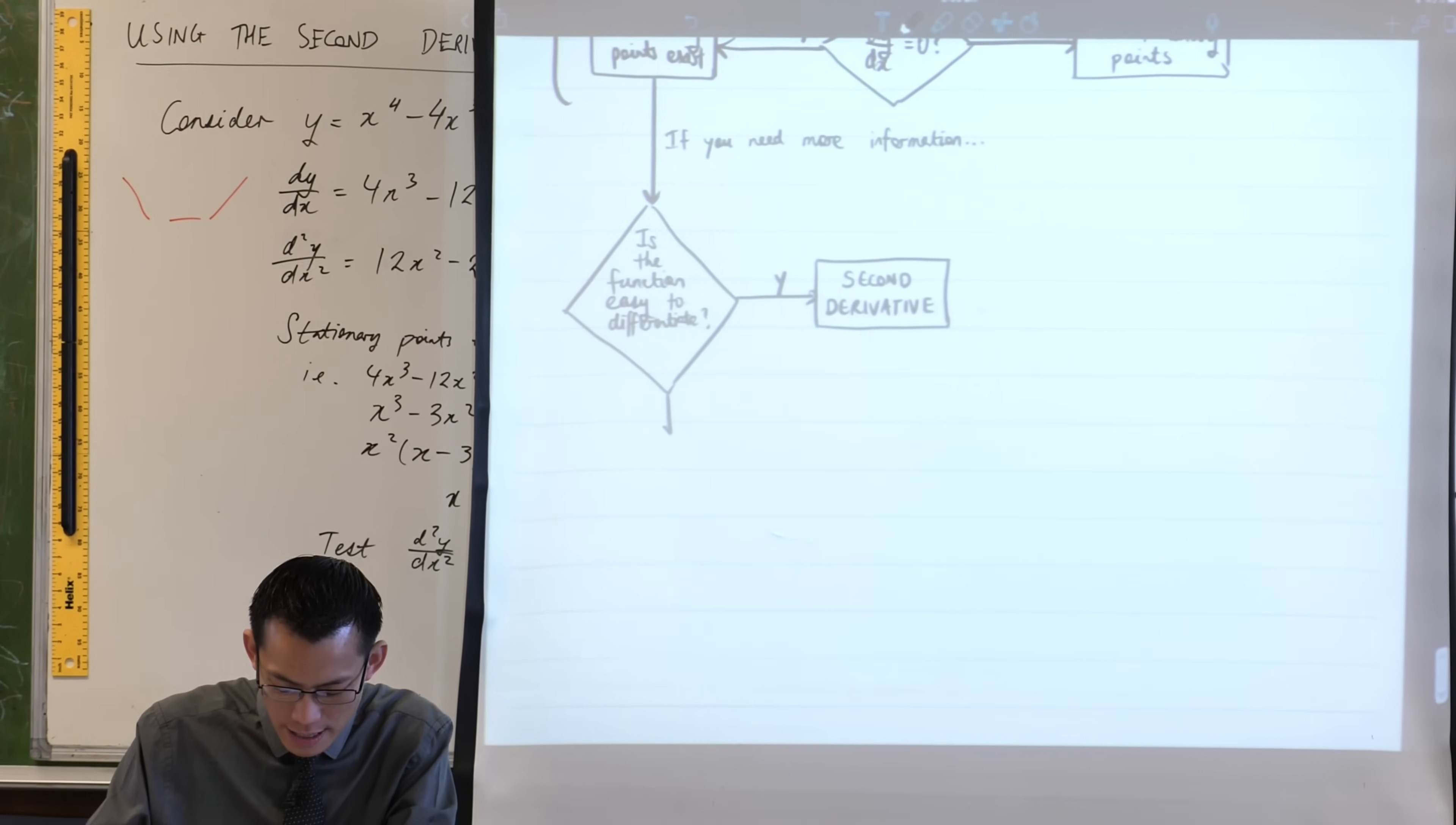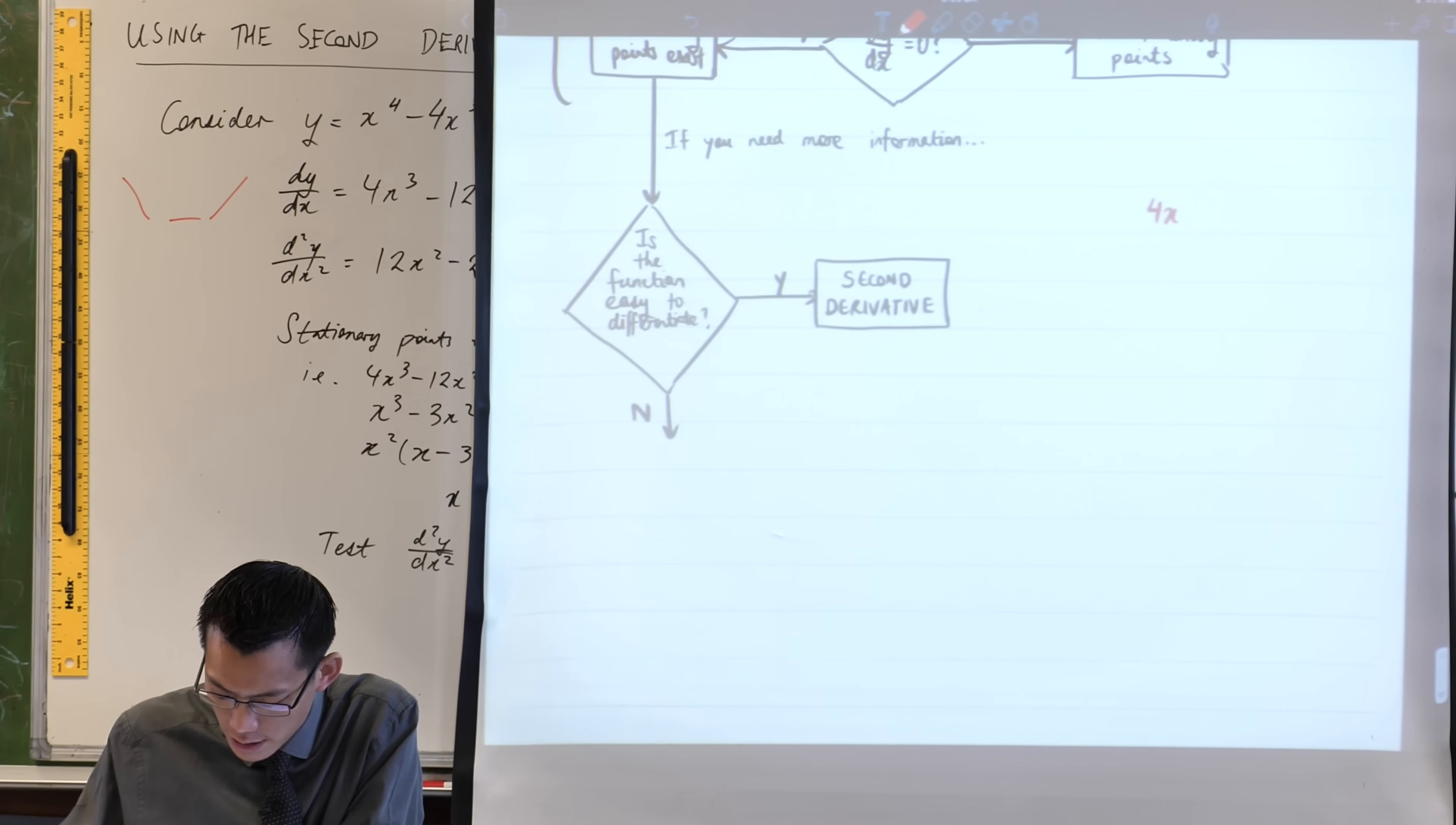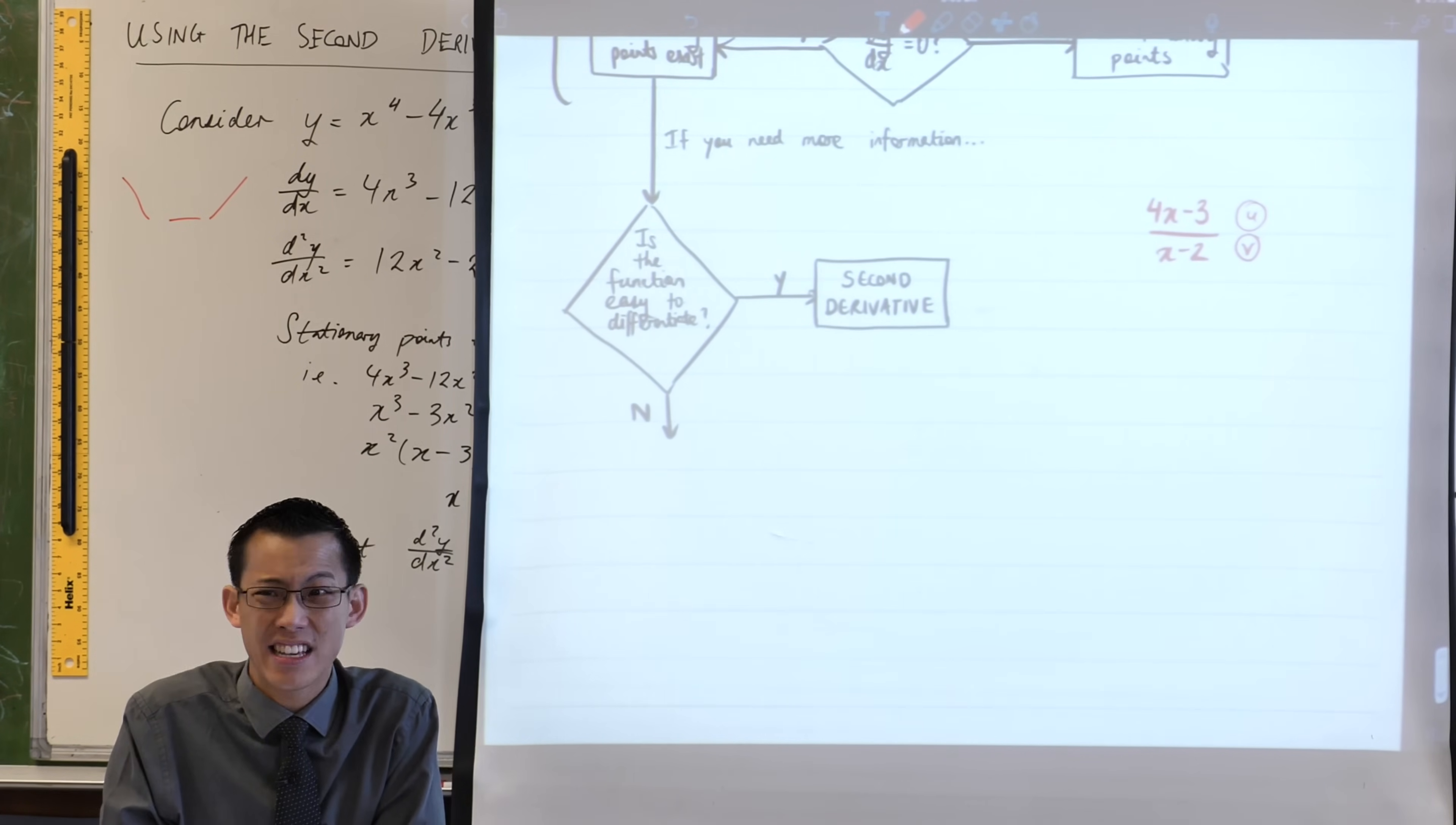If, of course, it is not easy to differentiate - don't write this down - it's quite easy to think of functions you already know how to differentiate that you're like, I don't want to differentiate that again. Here's an example: 4x minus 3 over x minus 2. You know how to differentiate that. What rule are you going to use? The quotient rule.